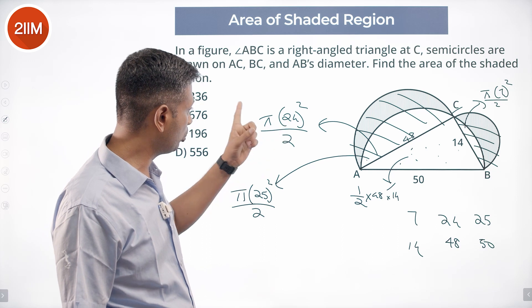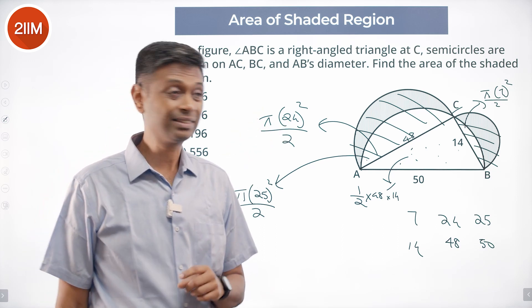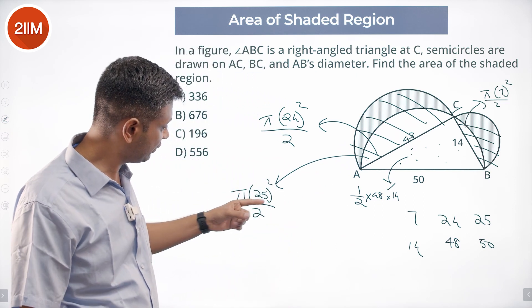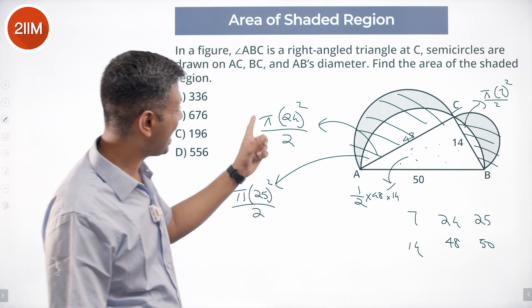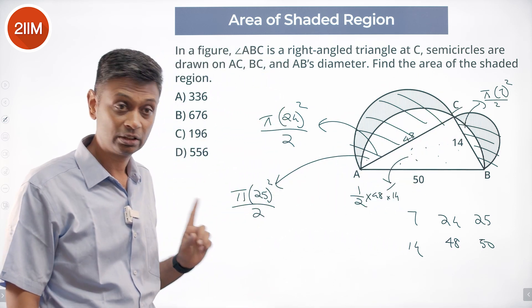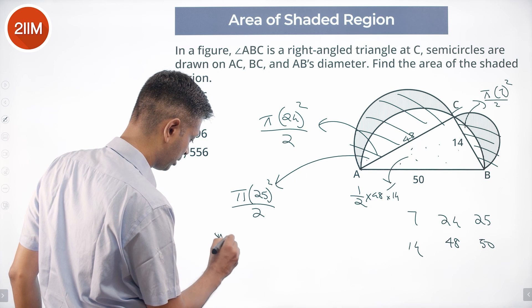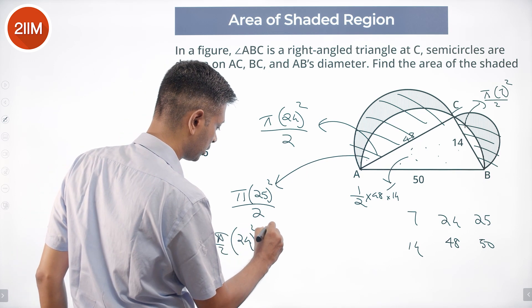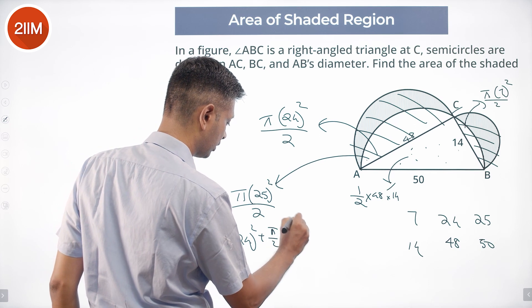π by 2, π by 2, π by 2. If I add these two and this, and then subtract this, notice this: we will get π by 2 times 24² plus π by 2 times 7²...